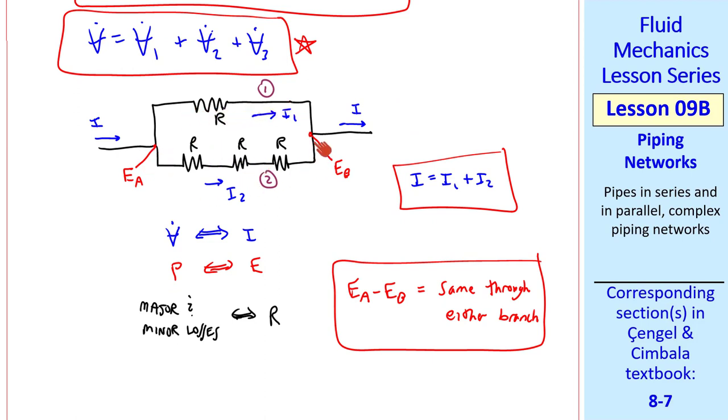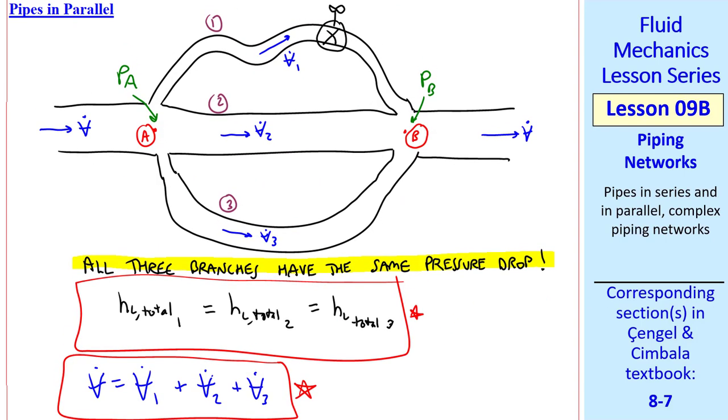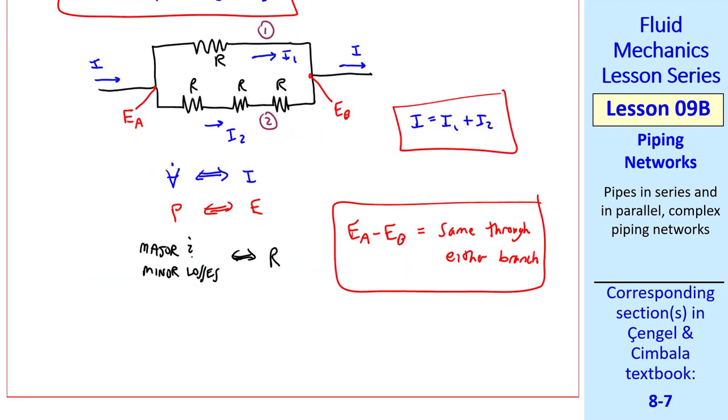Since these are fixed voltages, it doesn't matter which branch you go through. That's analogous to the pressure drop here, being the same regardless of the branch that you go through. And in this case, I2 will be less than I1, and I2 and I1 will adjust themselves accordingly, according to these resistances, analogous to our major and minor losses through each branch.